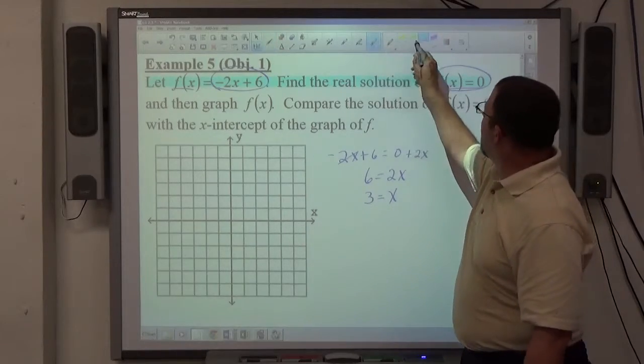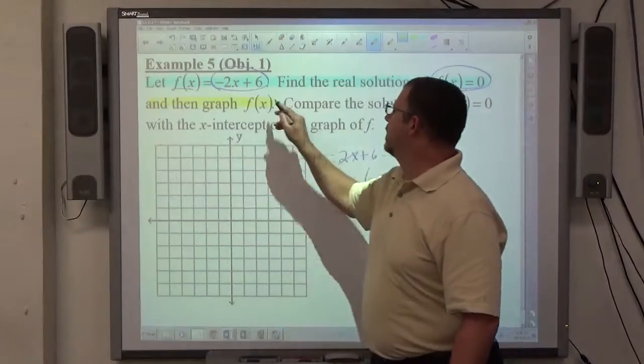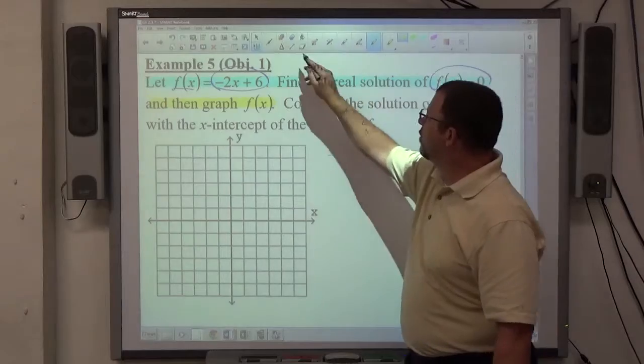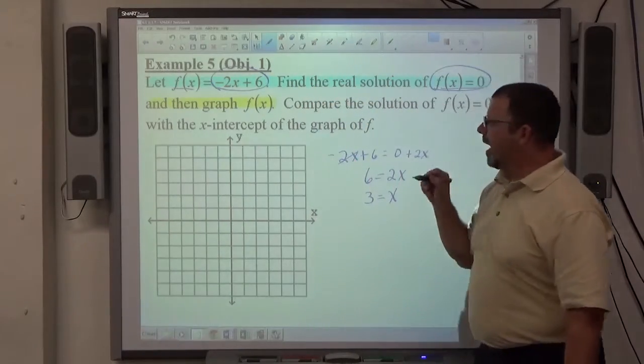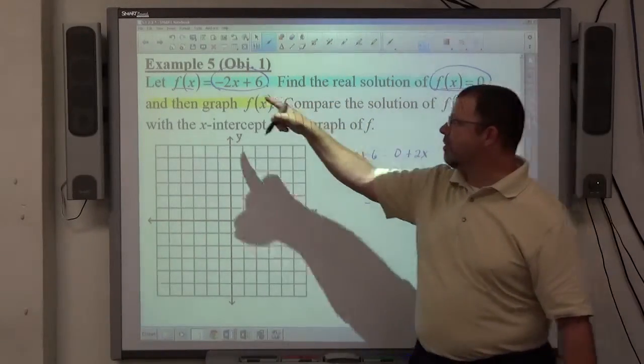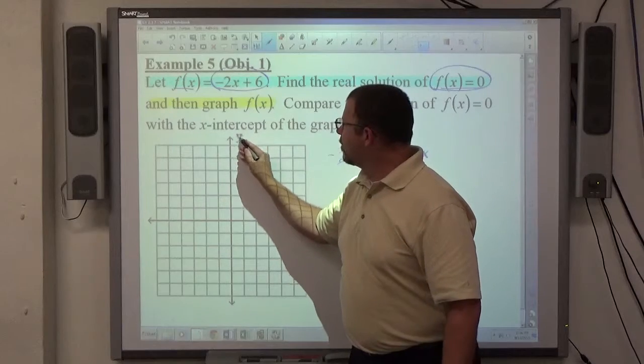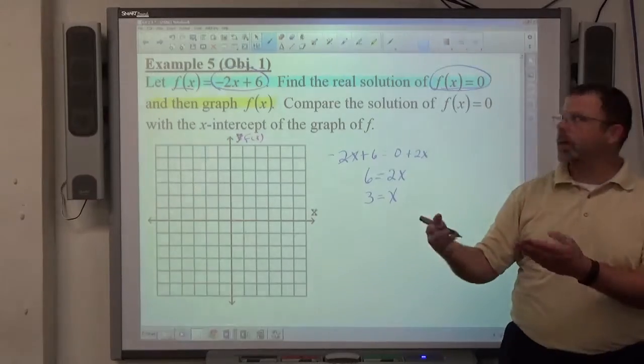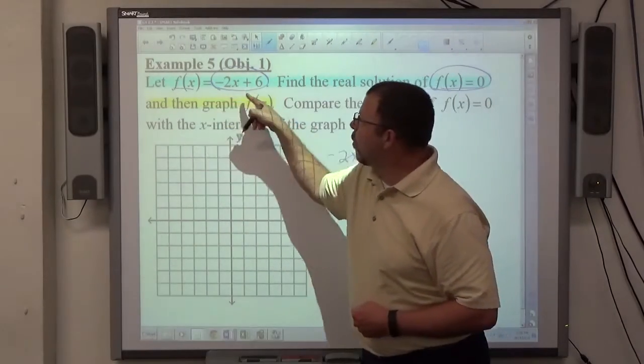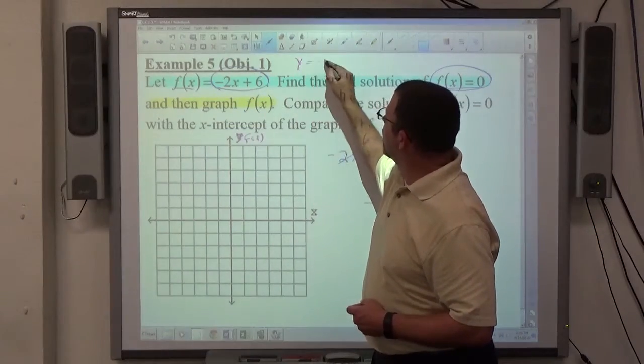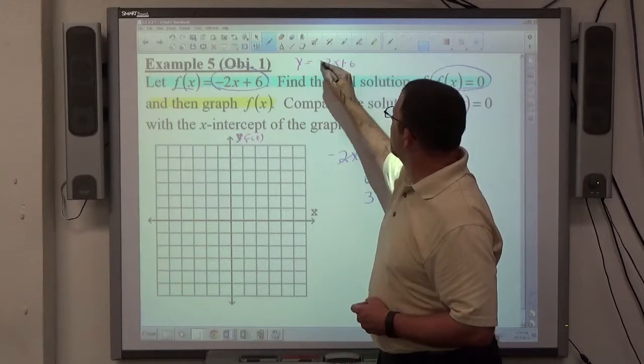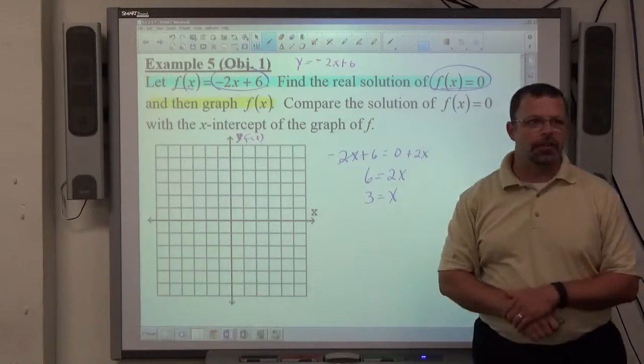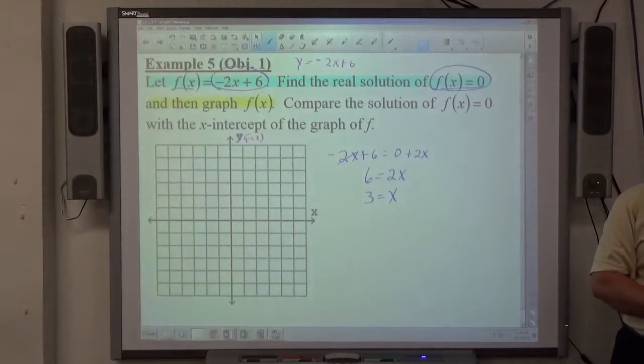Next thing to ask me to do is to graph f of x. f of x is a linear function. If you recall what I told you last week when you start getting these f of x's happening, f of x is just a fancy way of saying y. So f of x is the y coordinate. So if I were to write this in y terms, y equals negative 2x plus 6, you should recognize that as a linear function. y equals mx plus b.